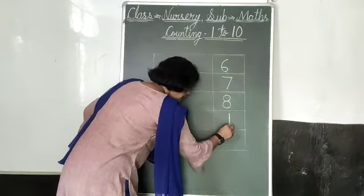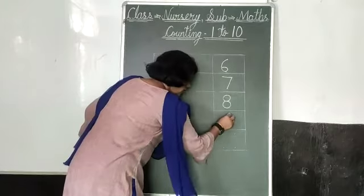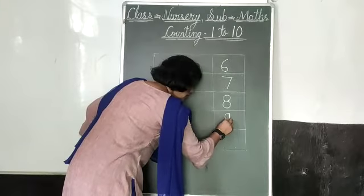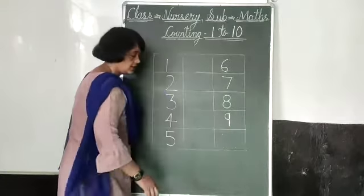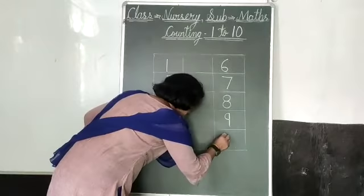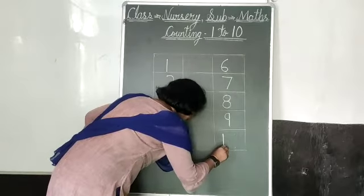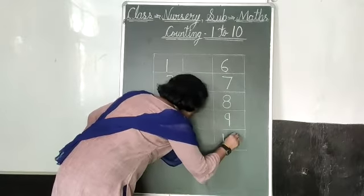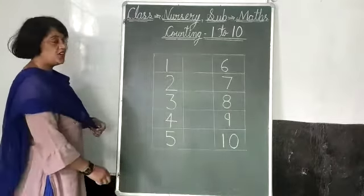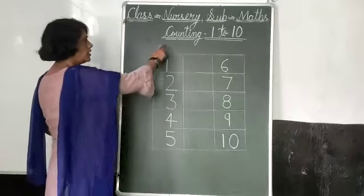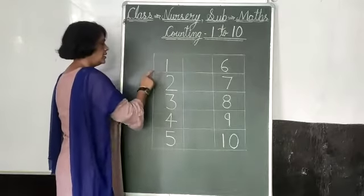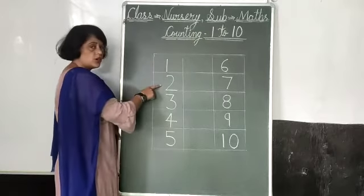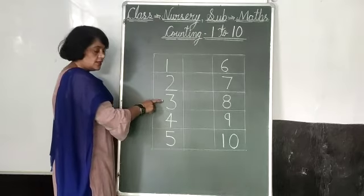Then join half circle. 9. 1, 0. 10. Now repeat again. Topic counting 1 to 10. This number 1, this number 2, this number 3, this